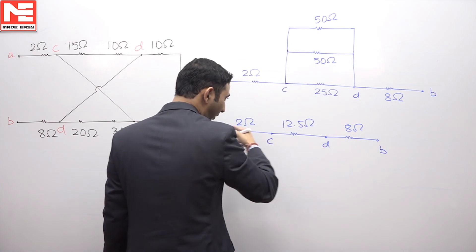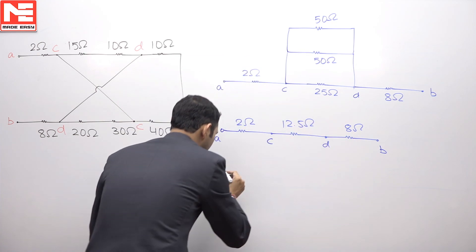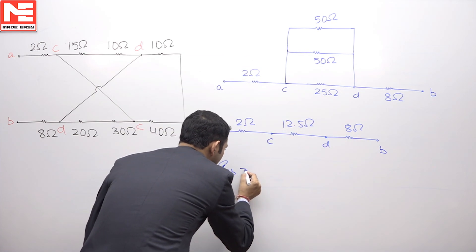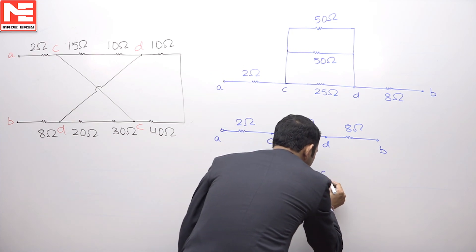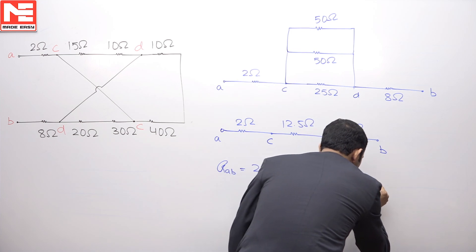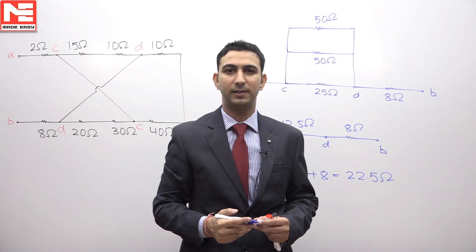Now if you see, they all are connected in series, hence 2 plus 8 is 10, 10 plus 12.5. It means the equivalent resistance between A and B will be 2 plus 12.5 plus 8, it is coming as 22.5 ohm, and hence option C is the correct option.